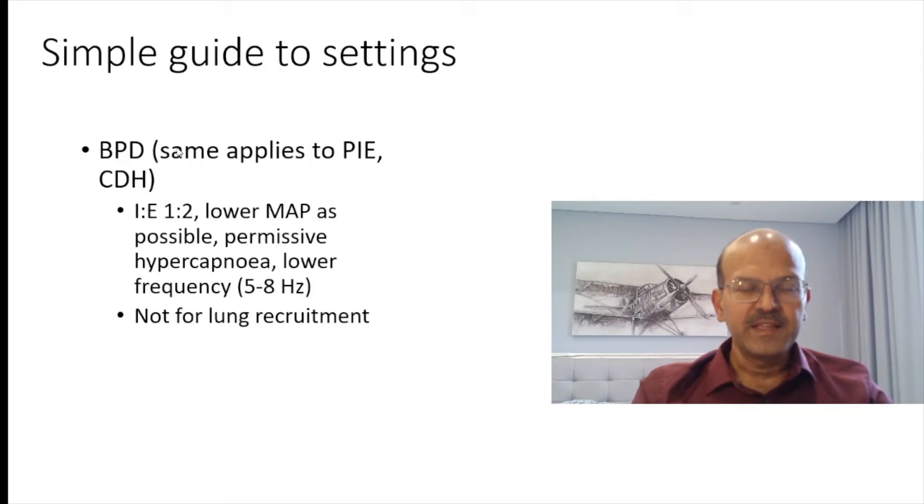And in BPD as well as in PIE and CDH you would use IE ratio 1 is to 2, use as low a MAP as possible. Accept permissive hypercapnia with the lower frequency and these babies are not for lung recruitment. So these are just a simple guide.